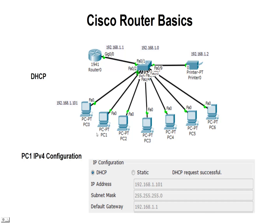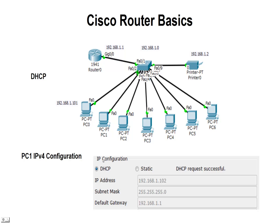We can go through the rest of these PCs. You can see the next one, PC1, has the IP address 102. As we turn these on one at a time, DHCP should go ahead and serve 103 to the next one, then 104, 105, 106, and 107.